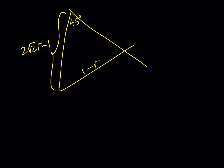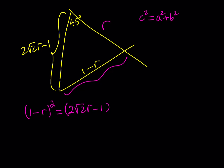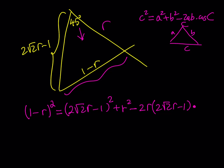So using the law of cosines — c² = a² + b² − 2ab·cos(C) — with the 45-degree angle as our reference, it looks like this: (1 − R)² = (2√2R − 1)² + R² − 2·R·(2√2R − 1)·cos(45°), where cos(45°) = √2/2. The 2 in the denominator cancels out, giving us a nice quadratic equation.